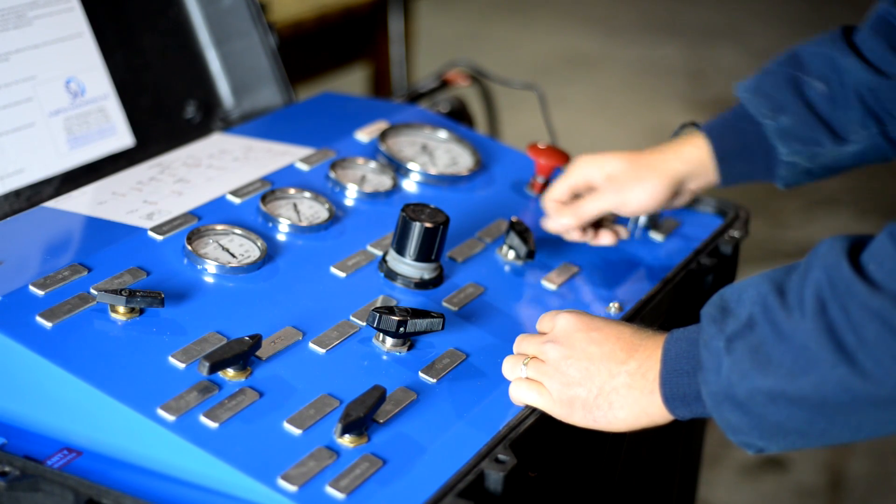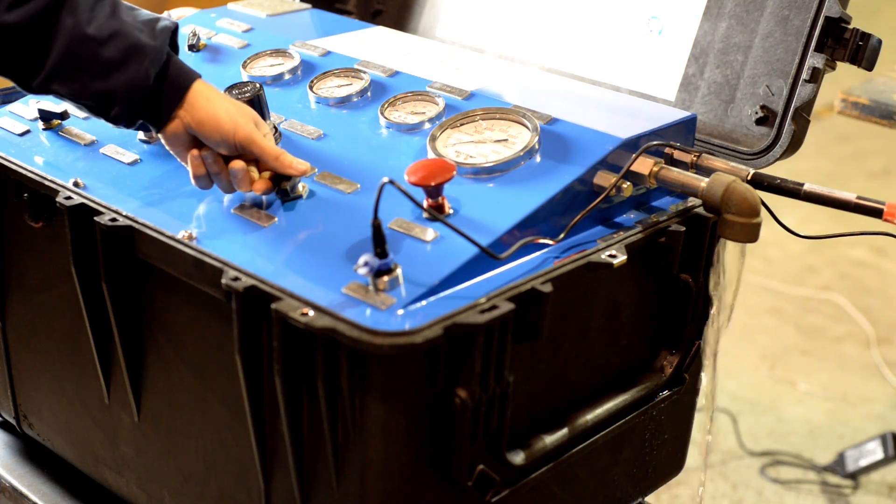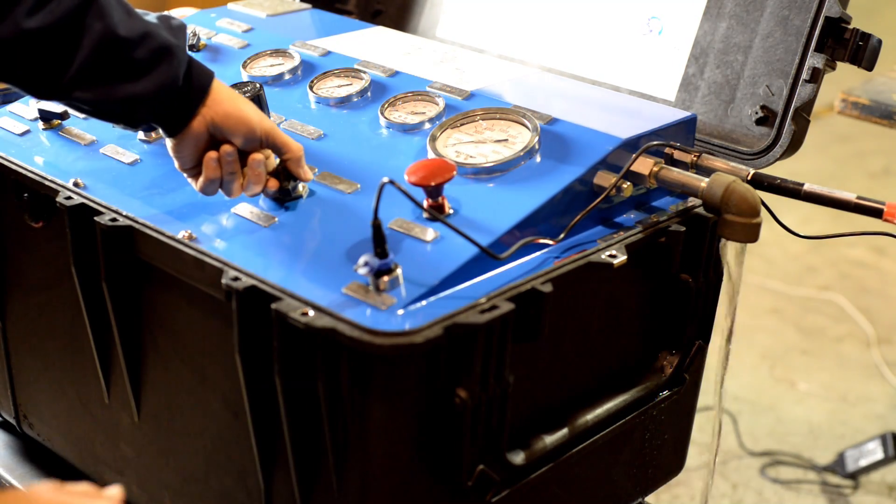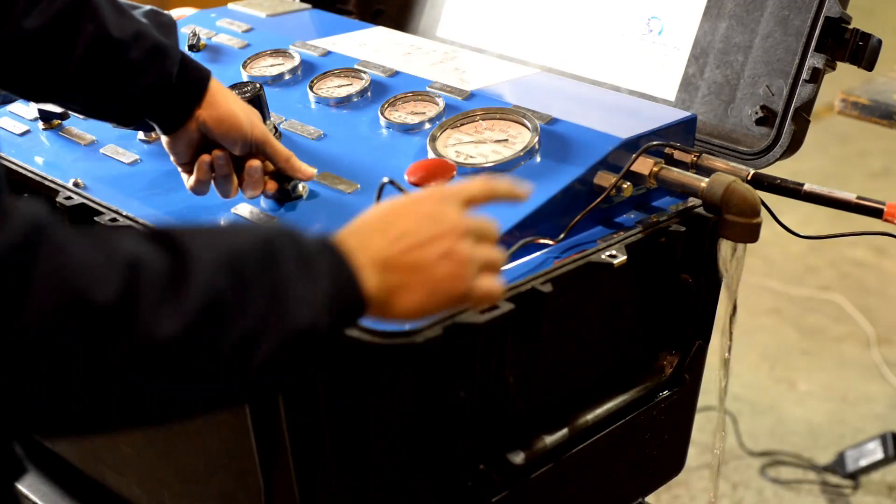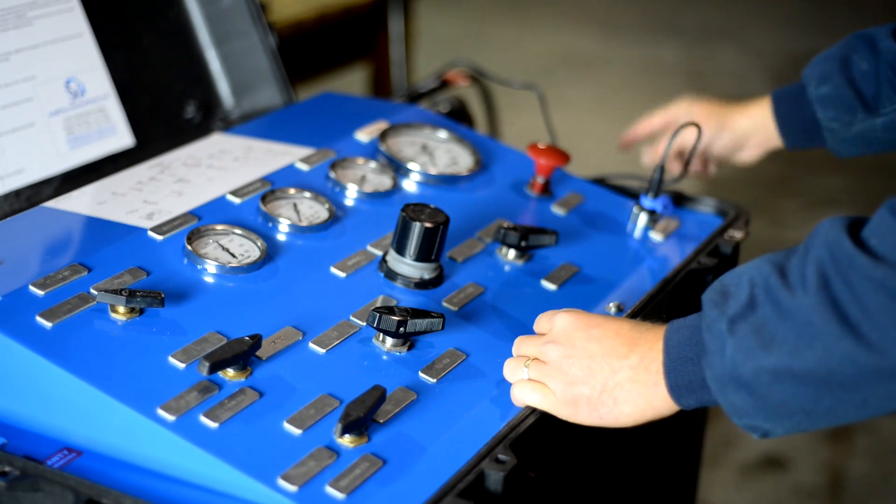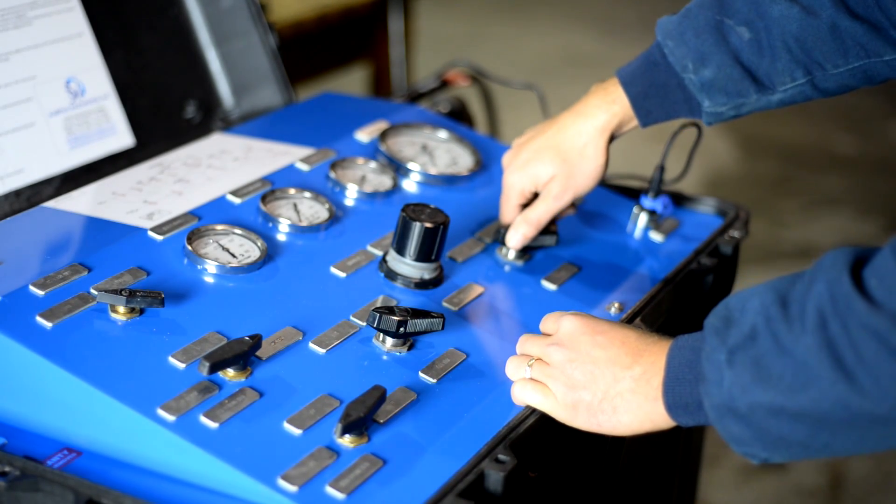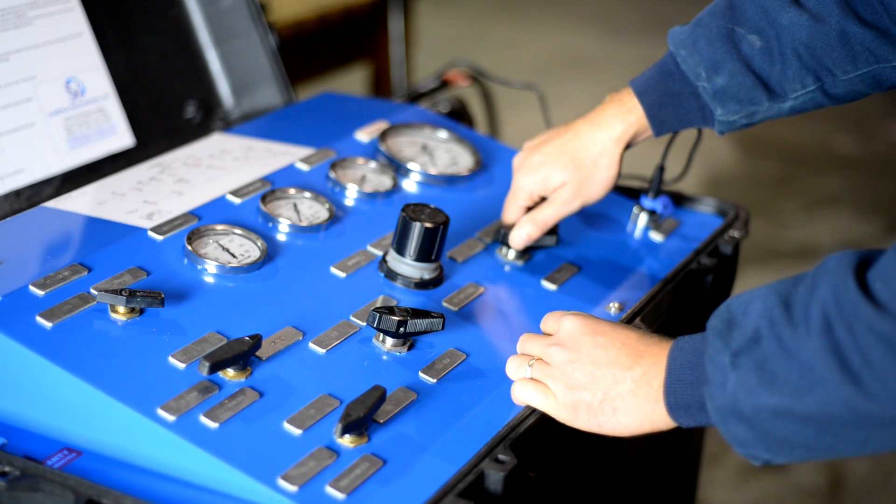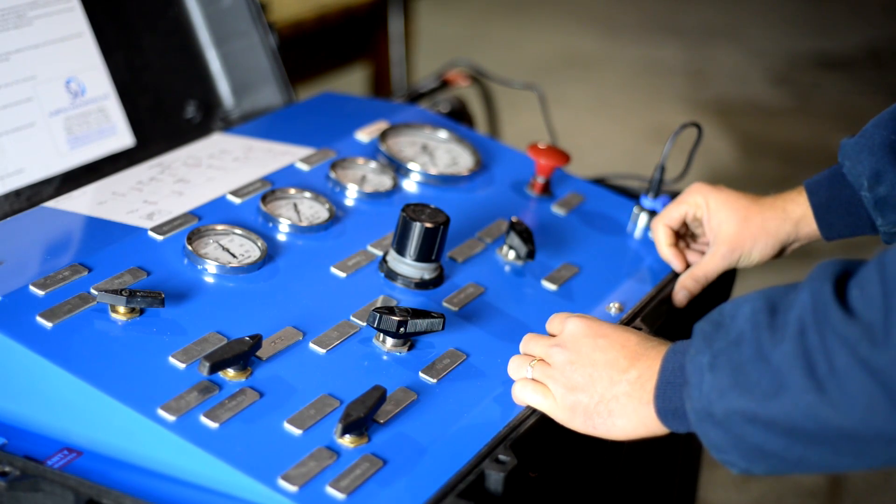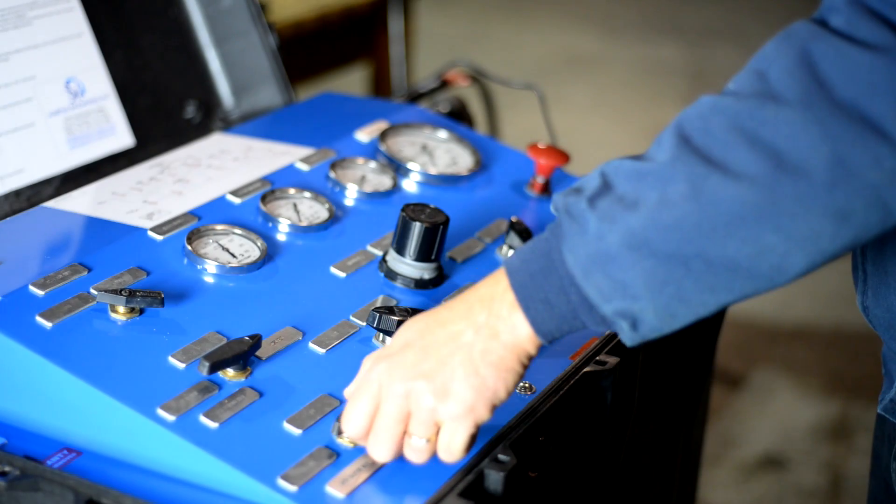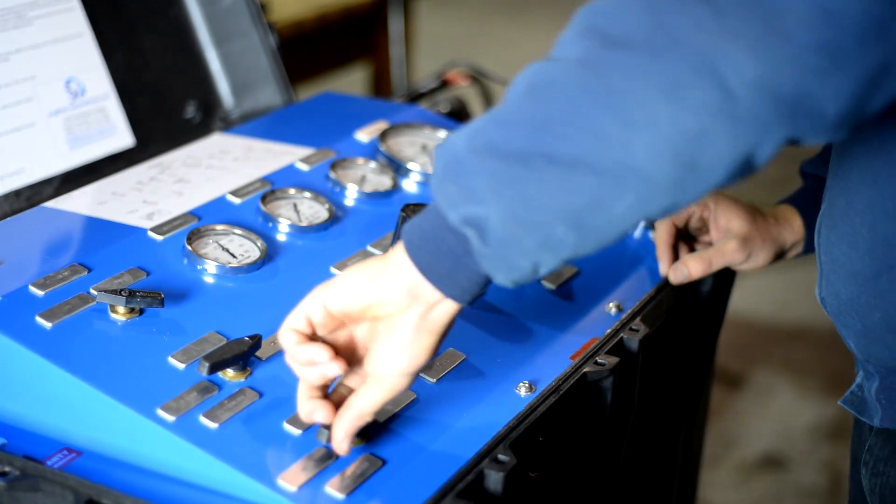Ensure you're not going to have air capsule trapped inside your valve. By opening your dump valve, you ensure you have a complete stream of water flowing through the unit. Once you ensure you don't have air trapped in your part that you're testing, close your dump valve.